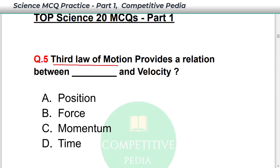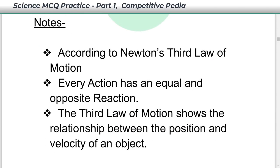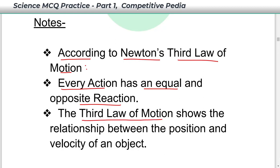The third law of motion provides a relation between position and velocity — option A is your answer. According to Newton's third law of motion, every action has an equal and opposite reaction. The third law of motion shows the relationship between the position and velocity of an object.